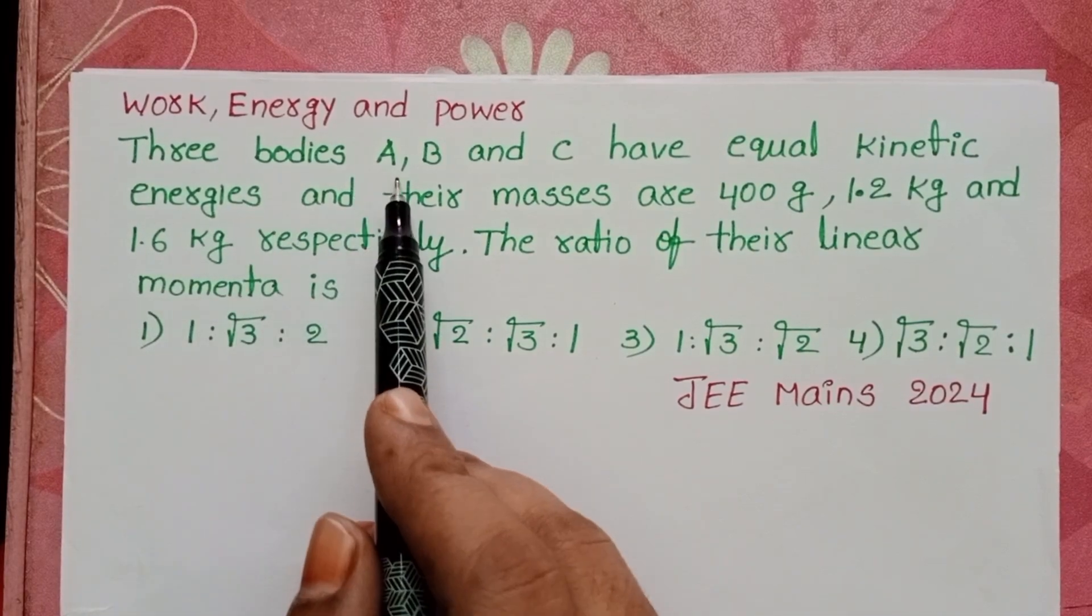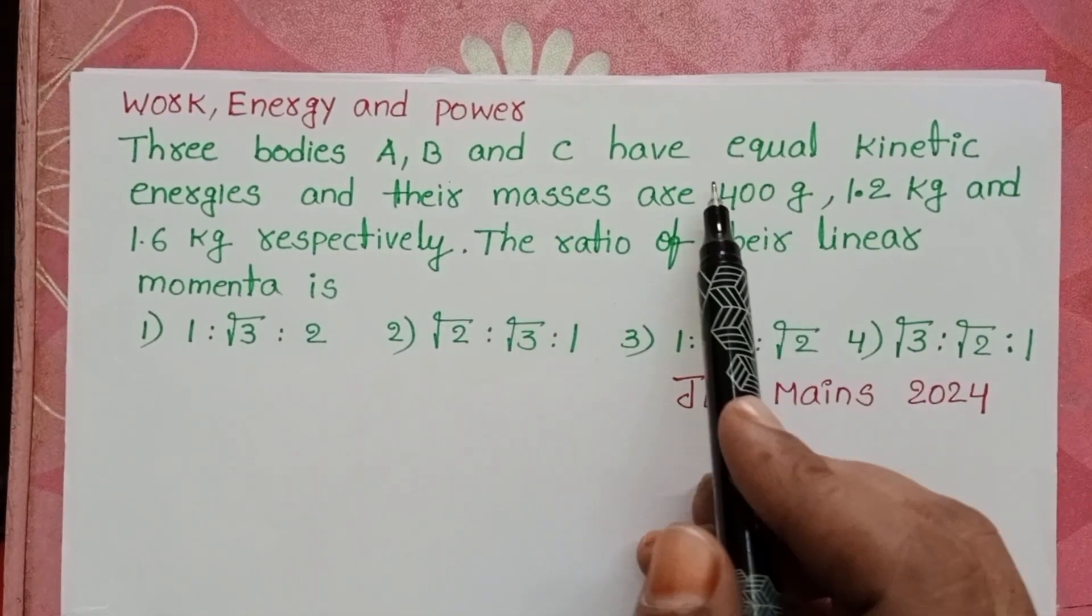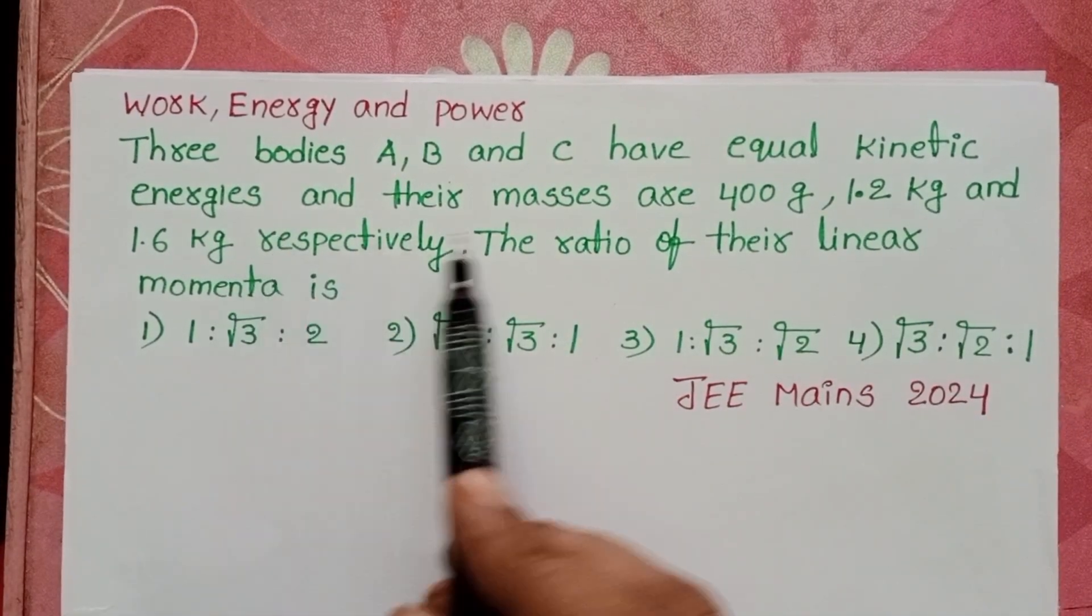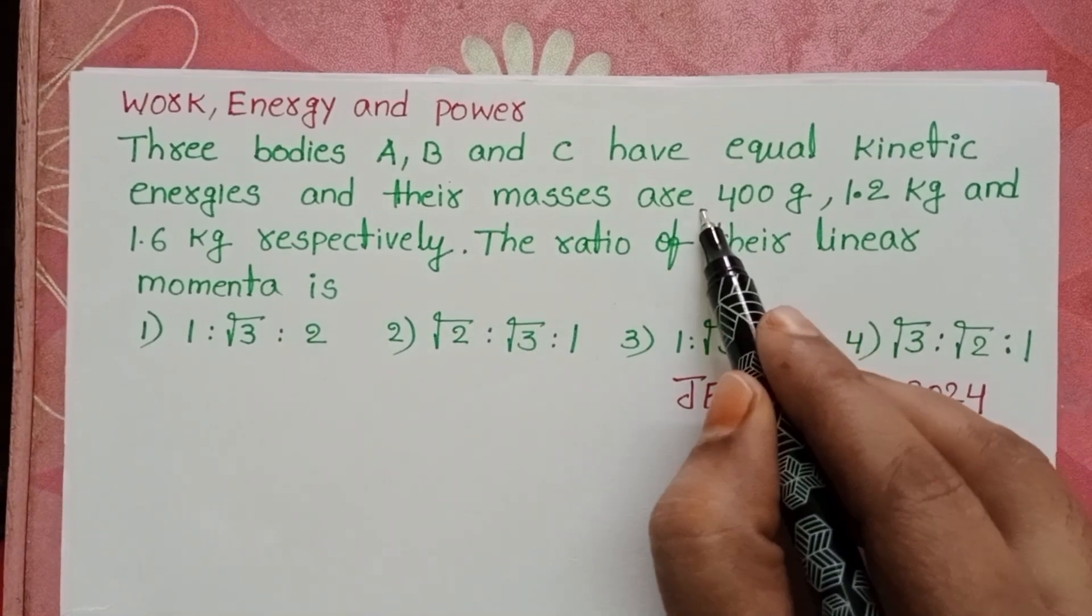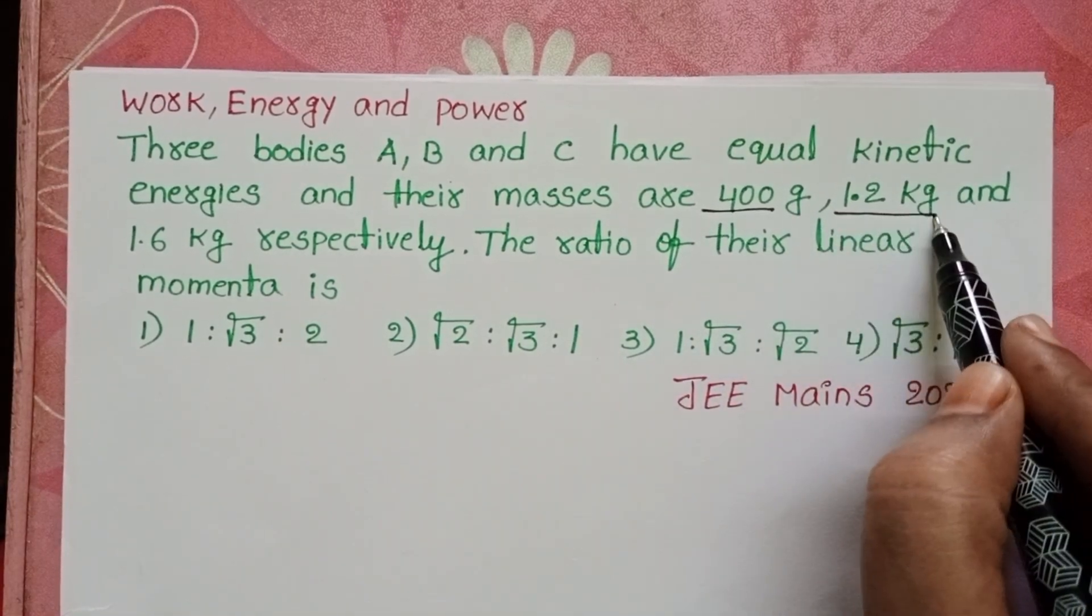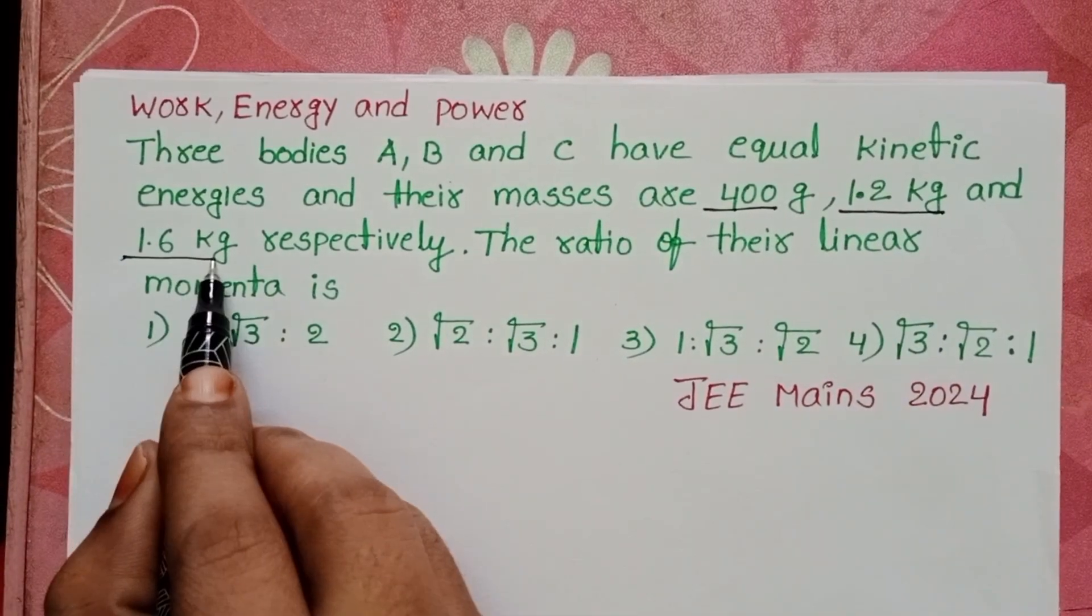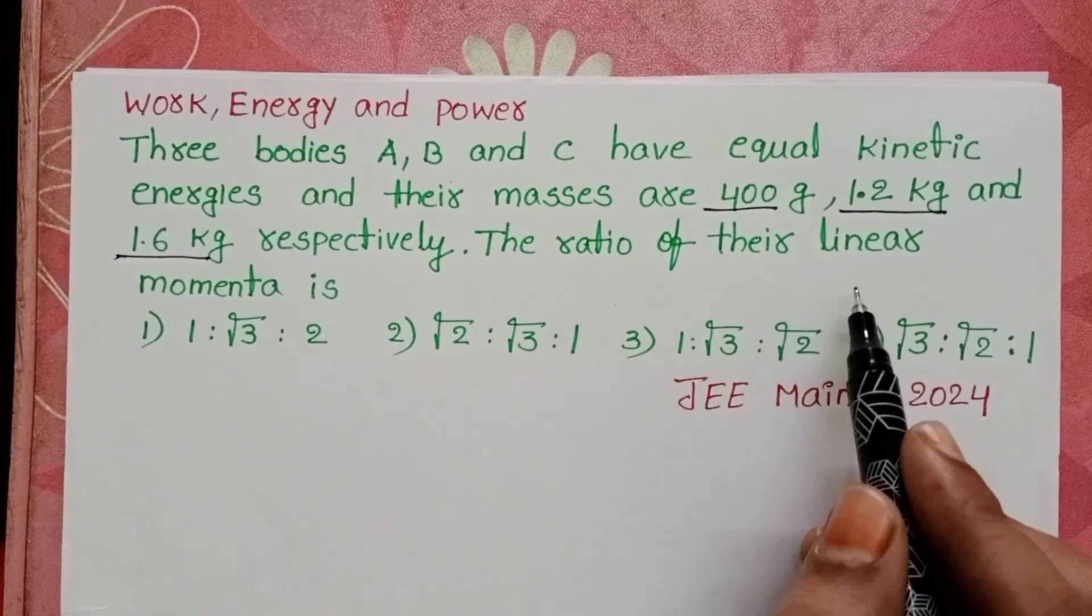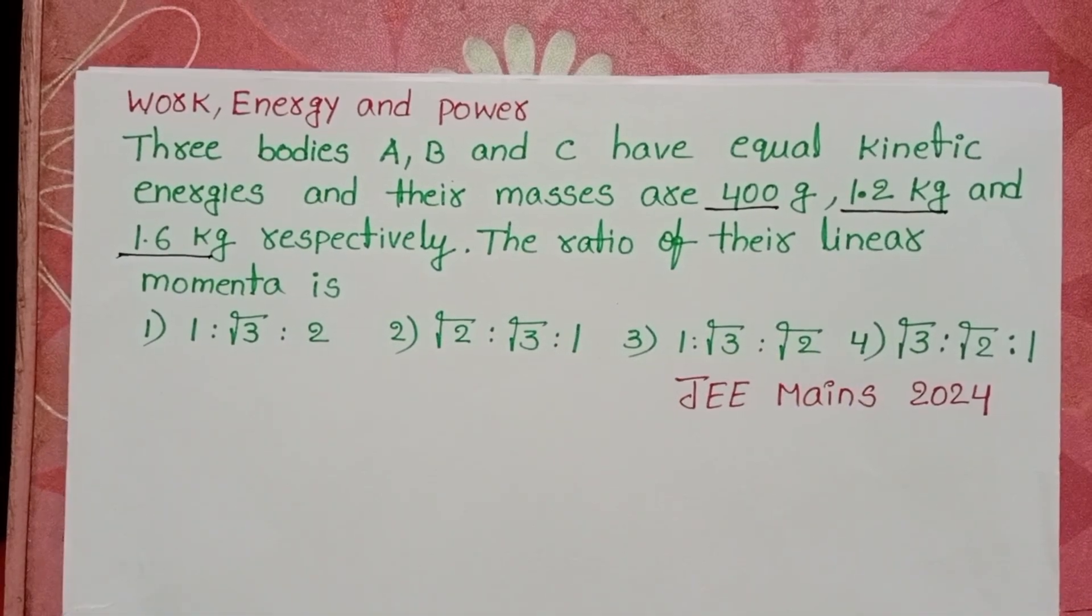Three bodies A, B, and C have equal kinetic energies and their masses are 400 grams, 1.2 kg, and 1.6 kg respectively. The ratio of their linear momenta is: